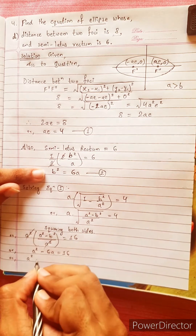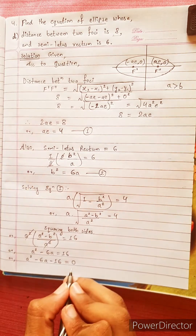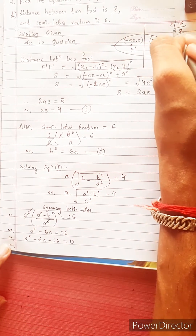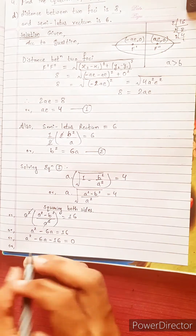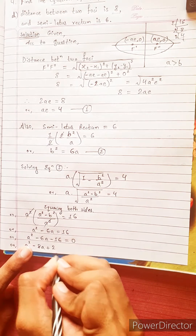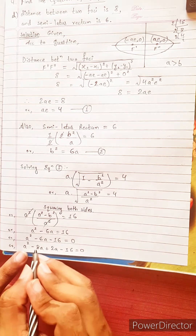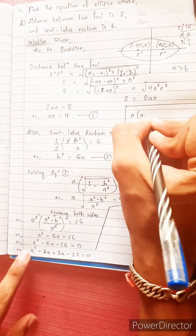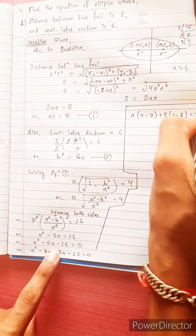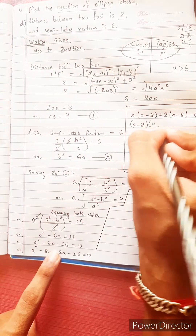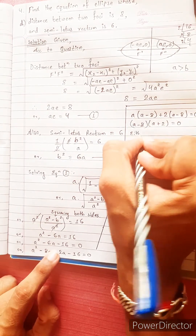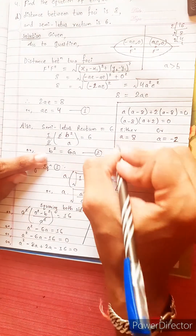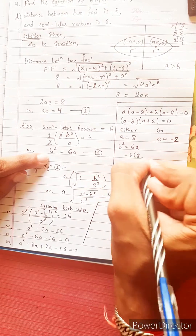Substituting b² = 6a: a² - 6a = 16, so a² - 6a - 16 = 0. Factoring: (a - 8)(a + 2) = 0, giving a = 8 or a = -2. Since a must be positive, a = 8.